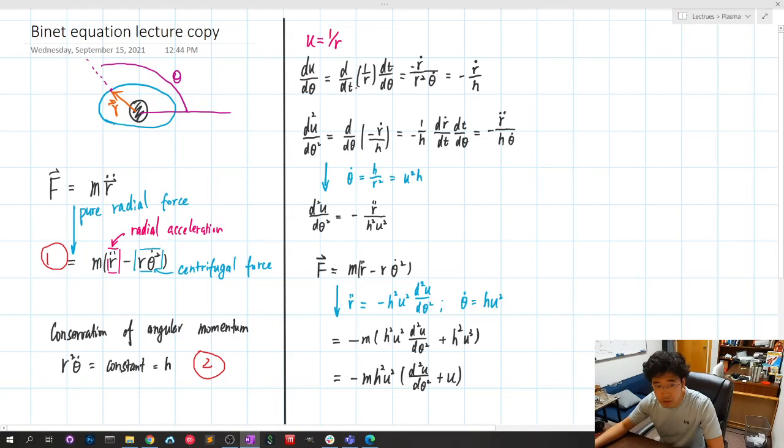So du dθ, we define u as 1 over r. Then we do the simple algebra. We do du dθ and multiply dt over dt. Then we ended up with this.